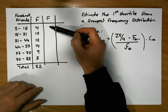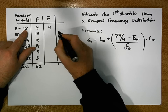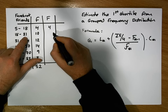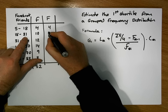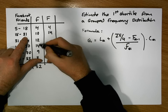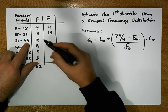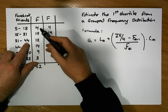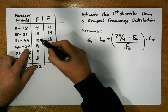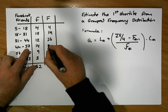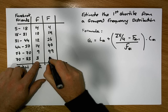The cumulative frequencies are simply an accumulation of the frequencies as we go down through the classes. The first cumulative frequency represents how many responses were less than 18 — there are 4. The next is how many were less than 31: 10 plus 4 gives us 14. Less than 44: 12 plus 10 plus 4 gives us 26. Less than 57: 14 plus 12 plus 10 plus 4 gives us 40. Then we have 49, and finally 52.